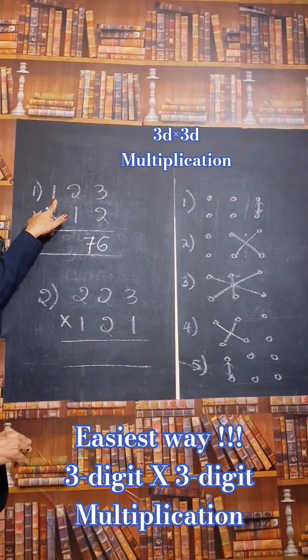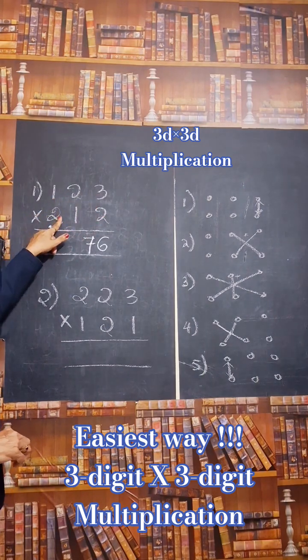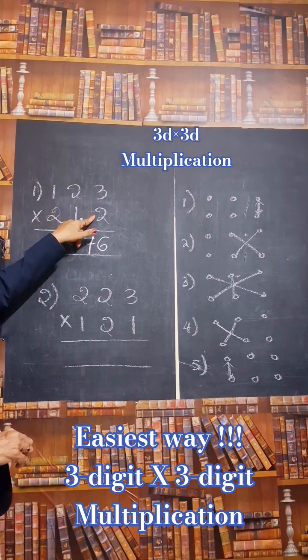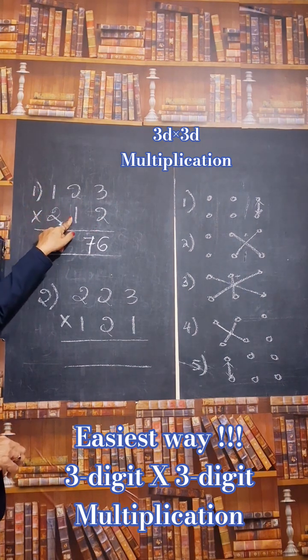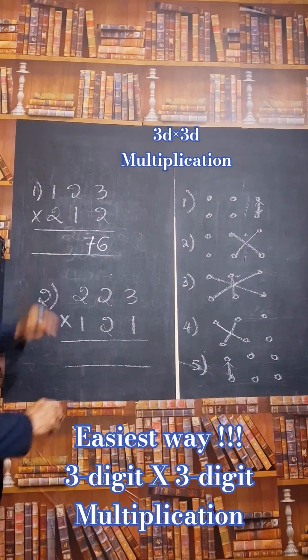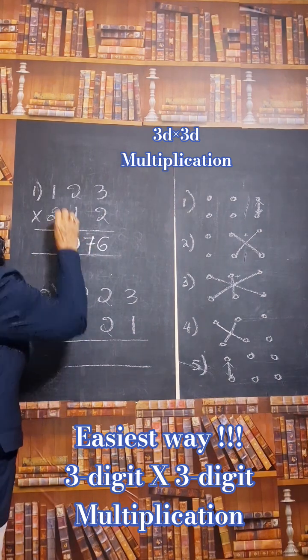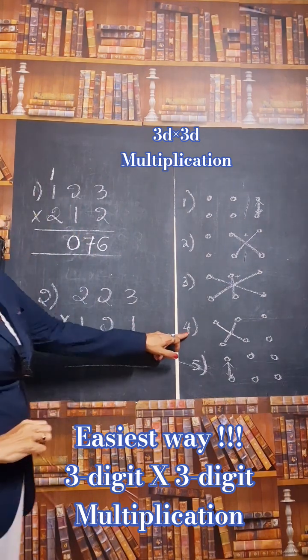2 into 1 is 2, plus 3 into 2 is 6. 2 plus 6 is 8, and 2 into 1 is 2. 8 plus 2 is 10. So write 0 then 1 carry. Okay. Next step.